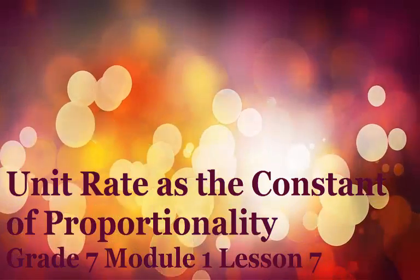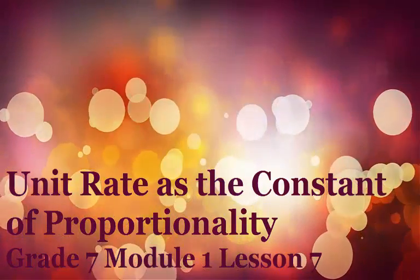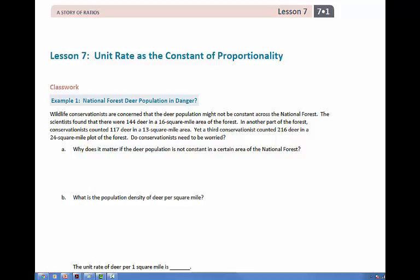Welcome. This is Lesson 7 in Module 1 for Grade 7. In this lesson, we're going to talk about the unit rate as the constant of proportionality. We've already talked about the unit rate and the value of the ratio being the same thing. The constant of proportionality is the same as the unit rate and the value of the ratio. It's just what happens when several ratios have the same value — we get the constant of proportionality.